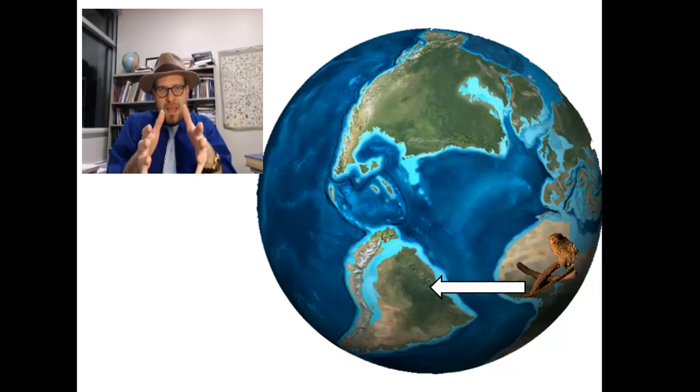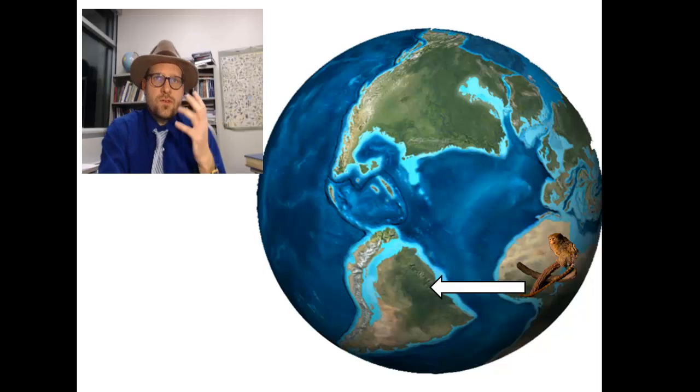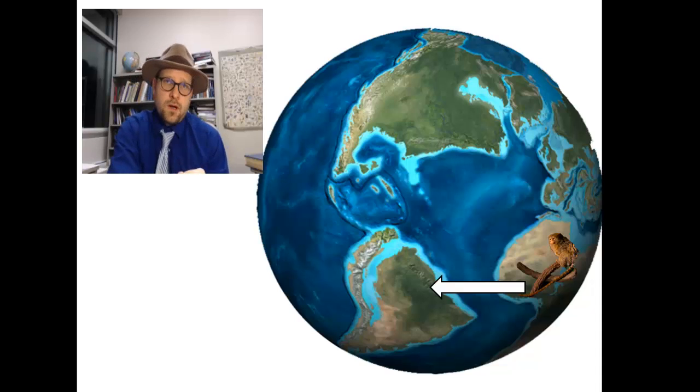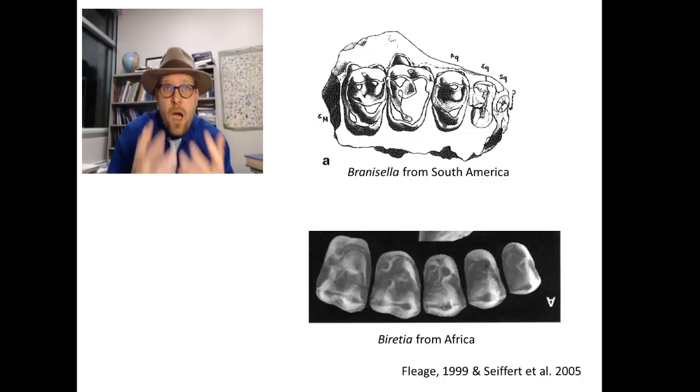The second scenario is that a population of African primates rafted across the Atlantic Ocean and arrived in South America during this time. This was a further distance to travel, but there are some morphological similarities between fossil Platyrines in South America and fossils known in Africa from the Late Eocene and Oligocene. For example, let's take a look at the similarities between the South American teeth of Branzilla and the African teeth of Britailla from the Late Eocene of Egypt. They almost look like they belong in the same mouth, despite being found a world apart from each other, Branzilla being several million years younger.